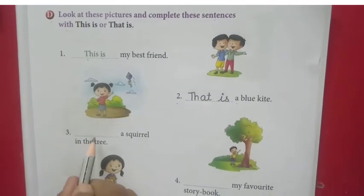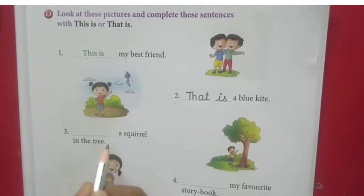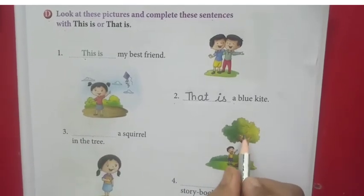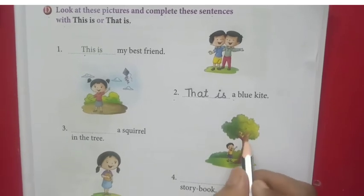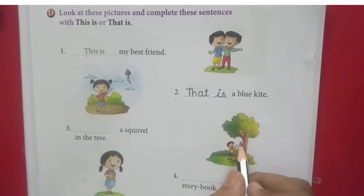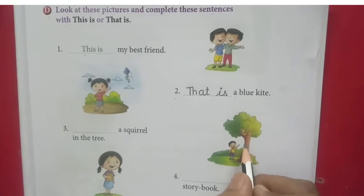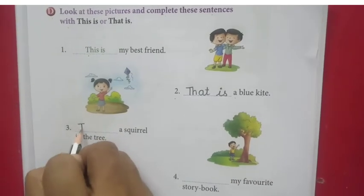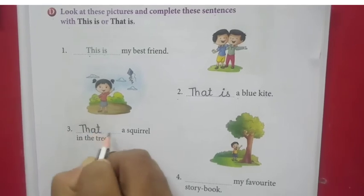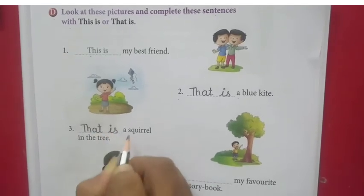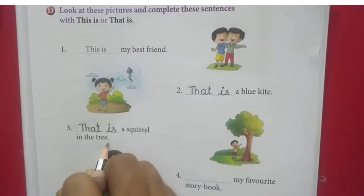Number 3. Dash — a squirrel in the tree. Squirrel kaha par hai? Tree par. So, it is nearby or far away? It is far away. So, what we have to use? 'That.' That is a squirrel in the tree.